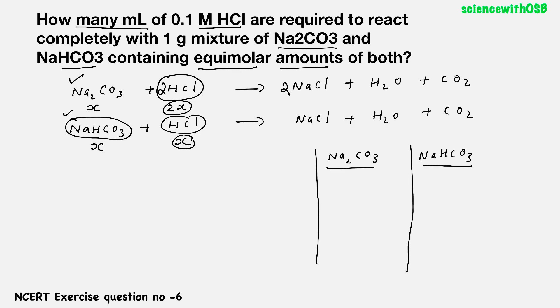For Na2CO3, what is the molar mass? Molar mass will be 2 into 23. Atomic mass of sodium is 23 plus carbon 12, oxygen 16 into 3. You will be getting like 106. For NaHCO3, molar mass will be 23 plus 1 plus carbon is 12 plus oxygen is 16 into 3. On calculating, you will be getting like 84.